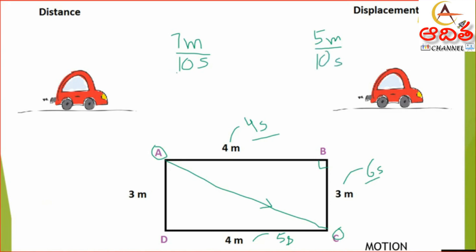On the left I have divided distance by time, and on the right I have divided displacement by time. Distance divided by total time taken gives me speed, and displacement divided by total time taken gives me velocity. The symbol used for both is V, and the unit of both is meter per second.